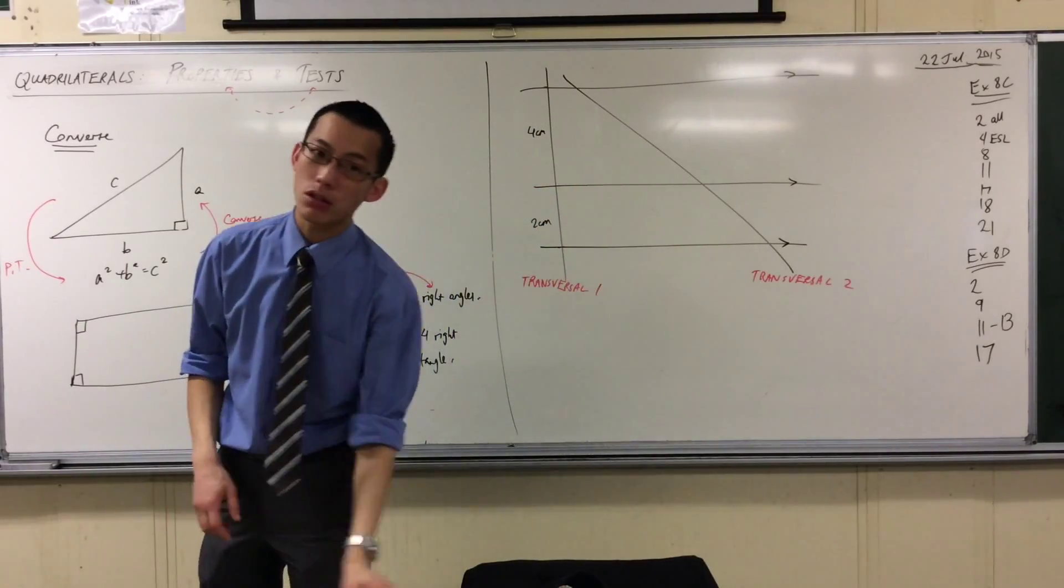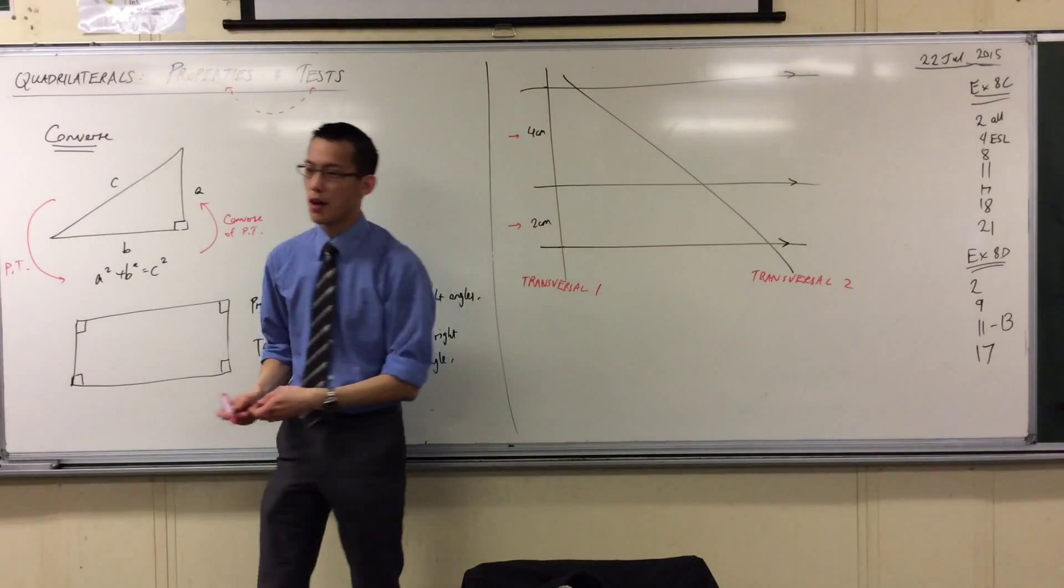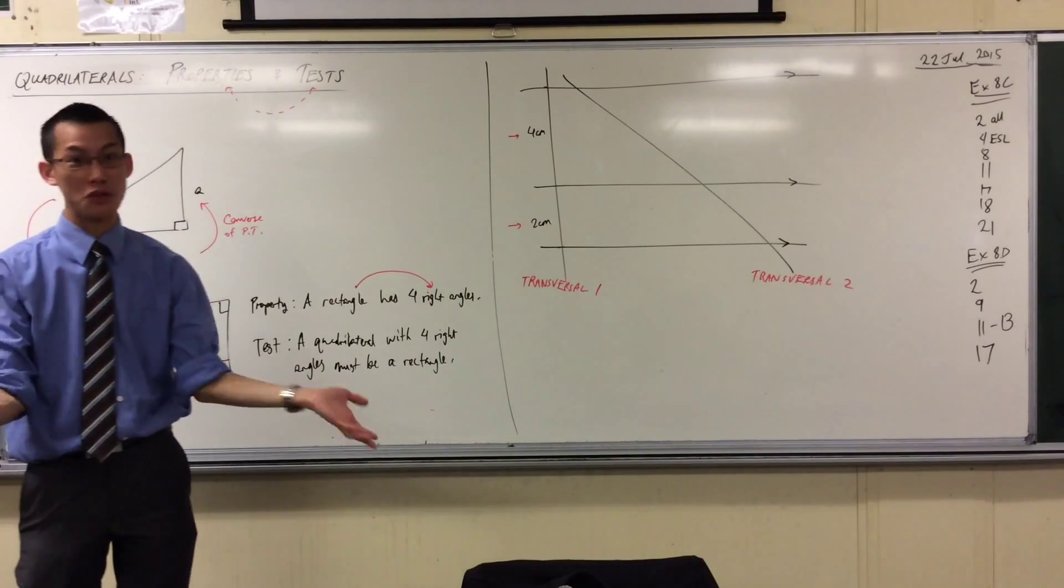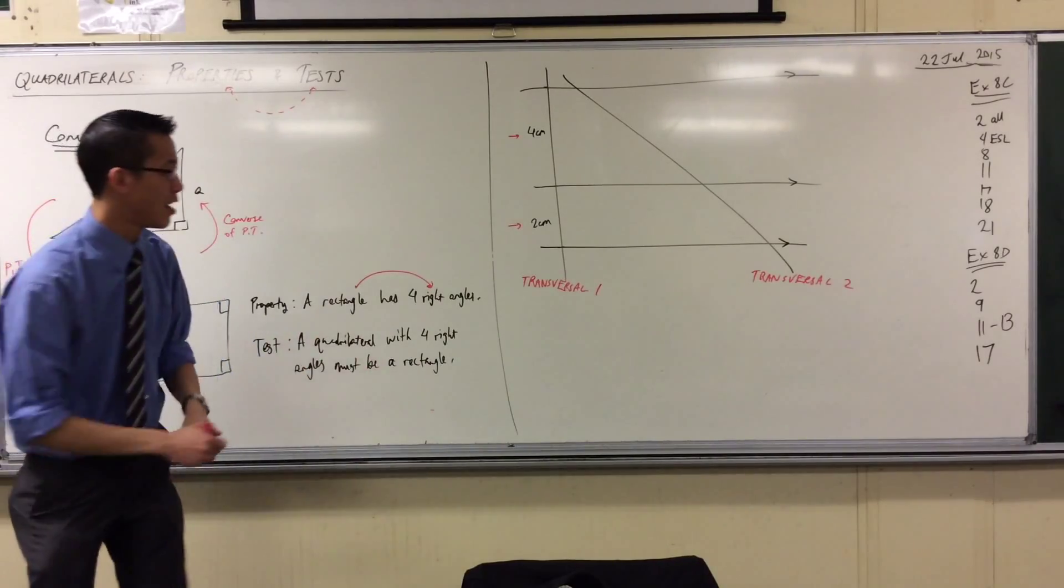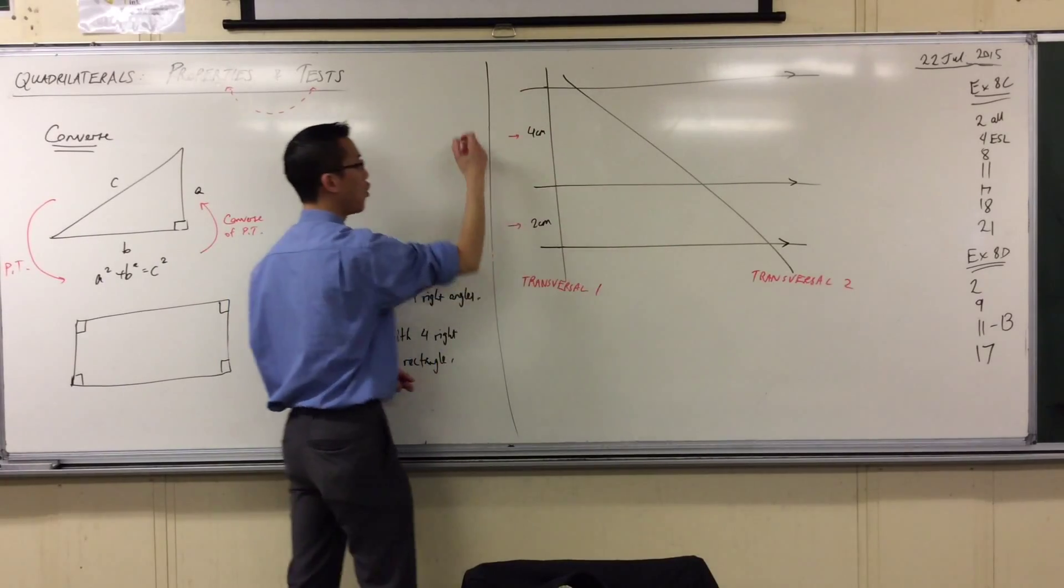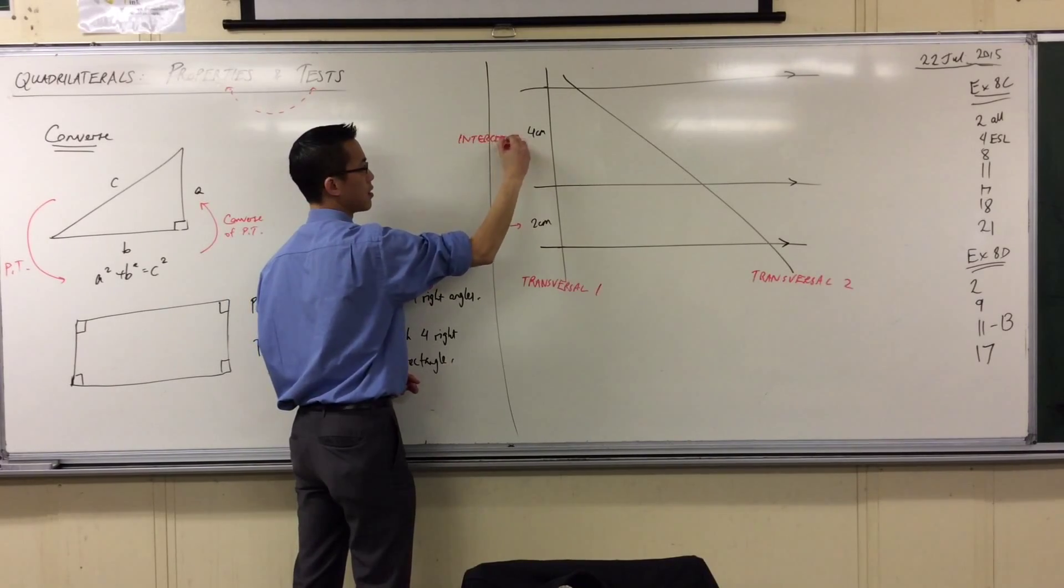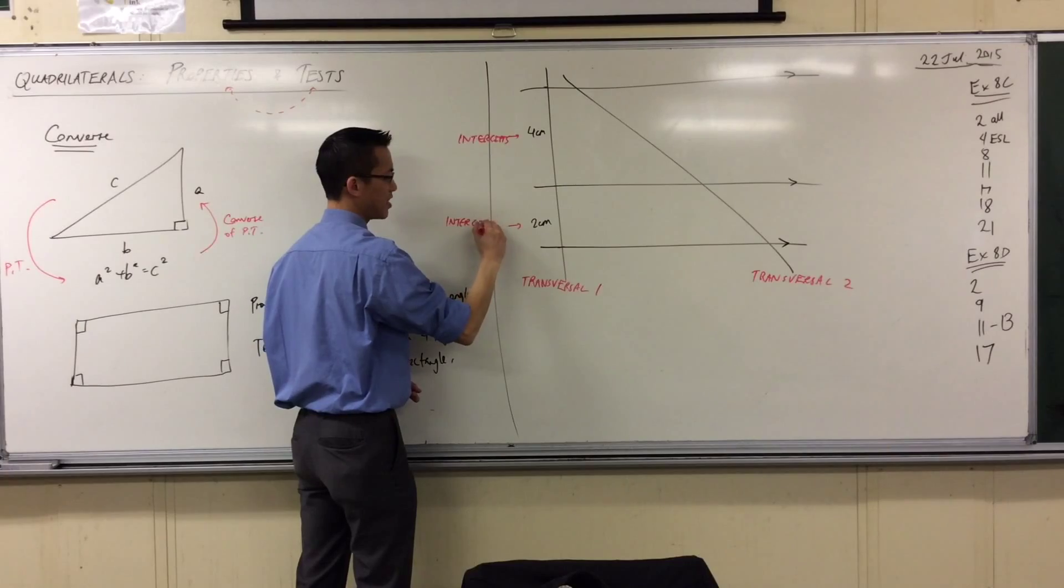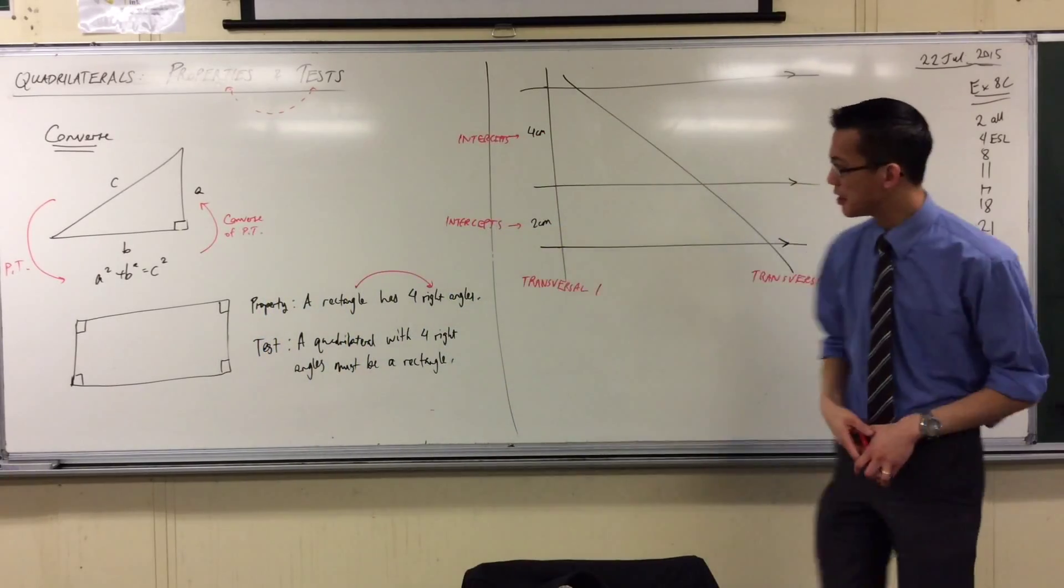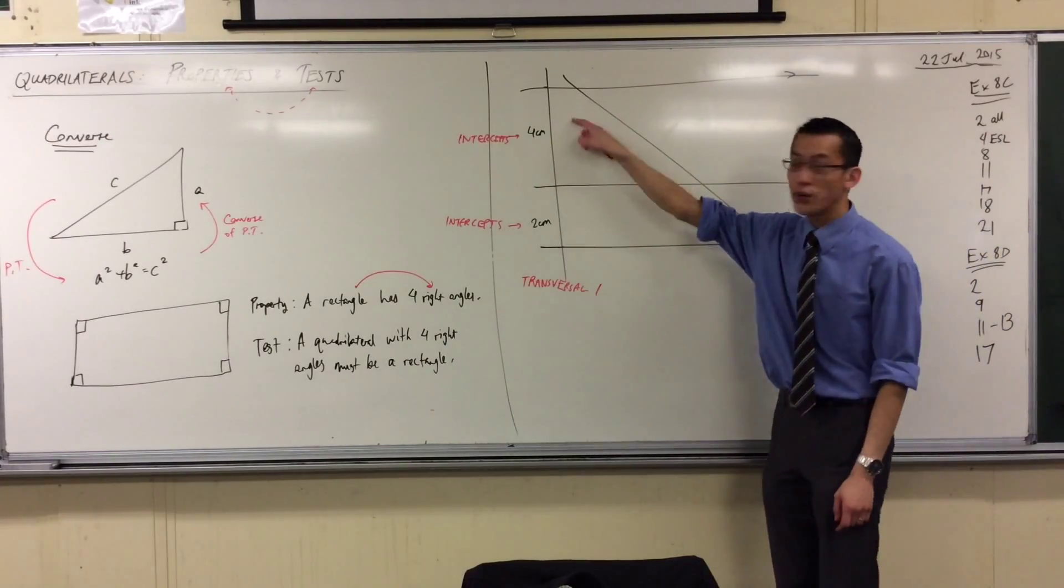Now, by the way, these portions also have a name. This four centimeter and this two centimeter bit that's been cut off, because the way it's been made is through those points of intersection, we're actually going to borrow a word we've been using all the time for when things intersect. This interval and this interval are called intercepts.